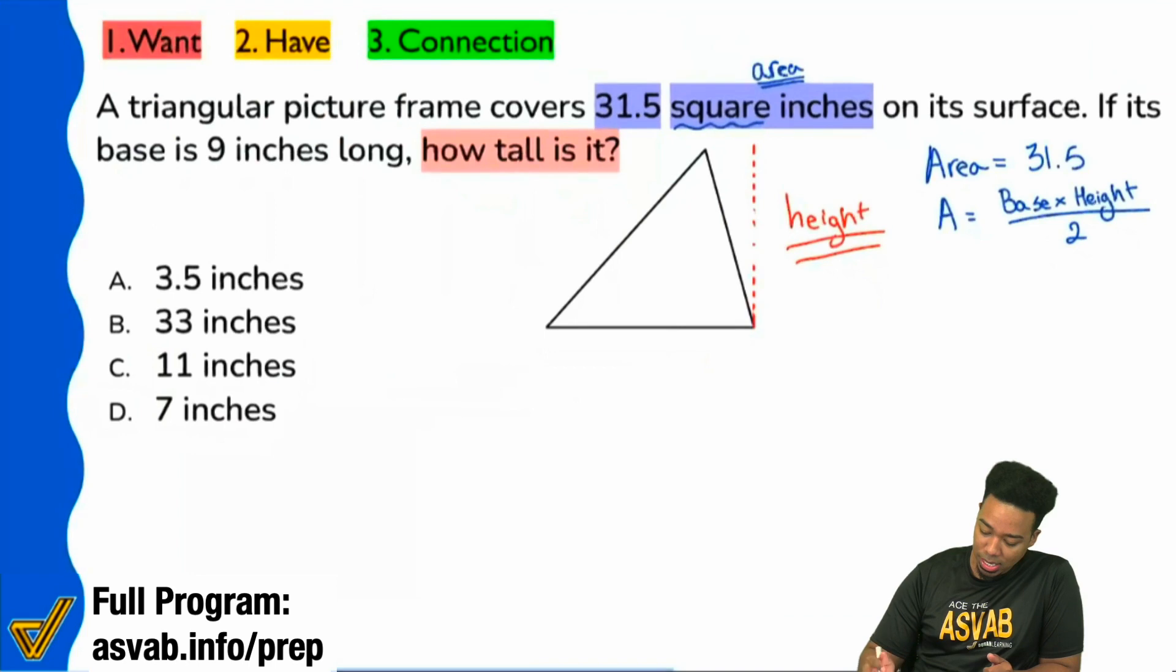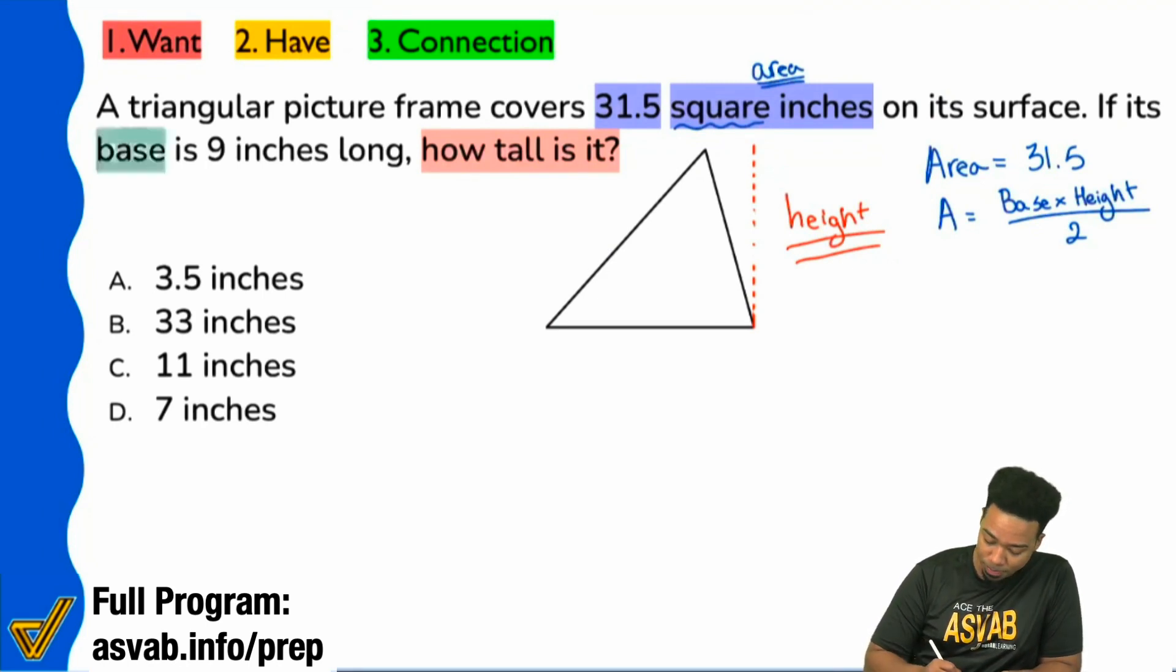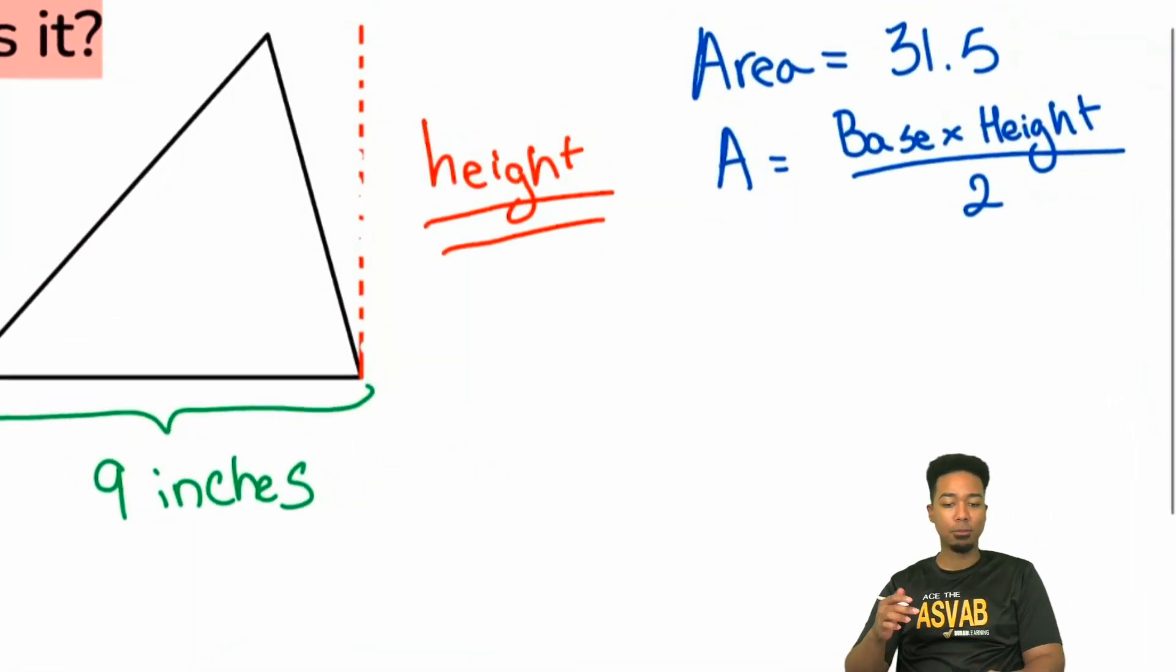Because as we continue, we see that it says, if its base is nine inches long, the base being running from the left to the right side, right over here, guess what? That's very, very, very convenient. Very convenient. Because if we come right over here, and we write nine inches, look at what we have. Let's just zoom in on the information that we have, everybody. Take a look.